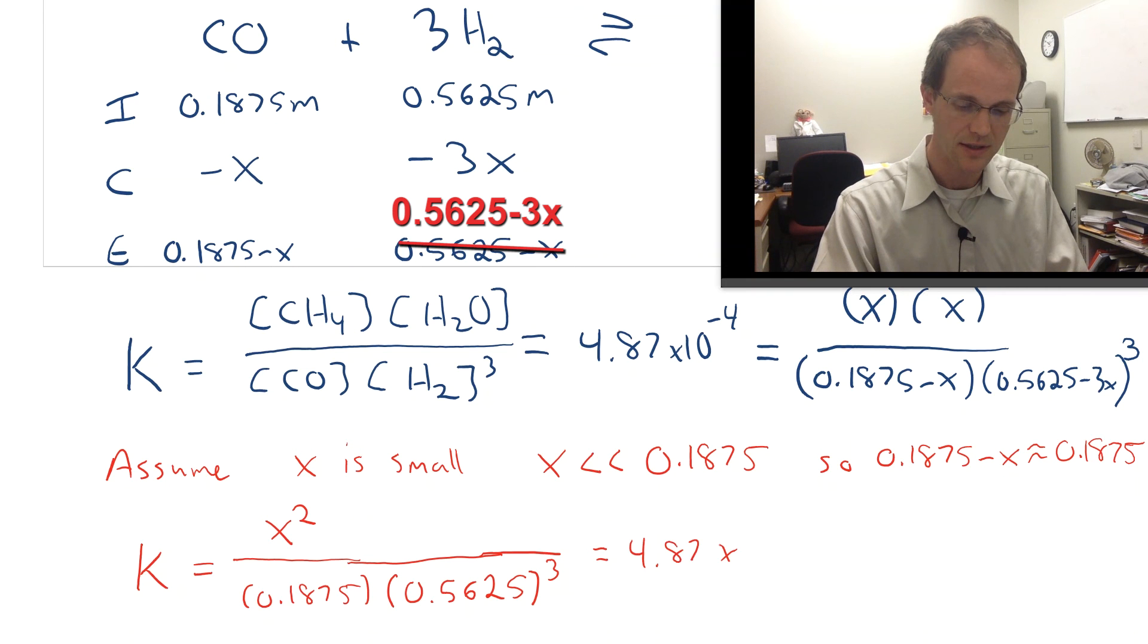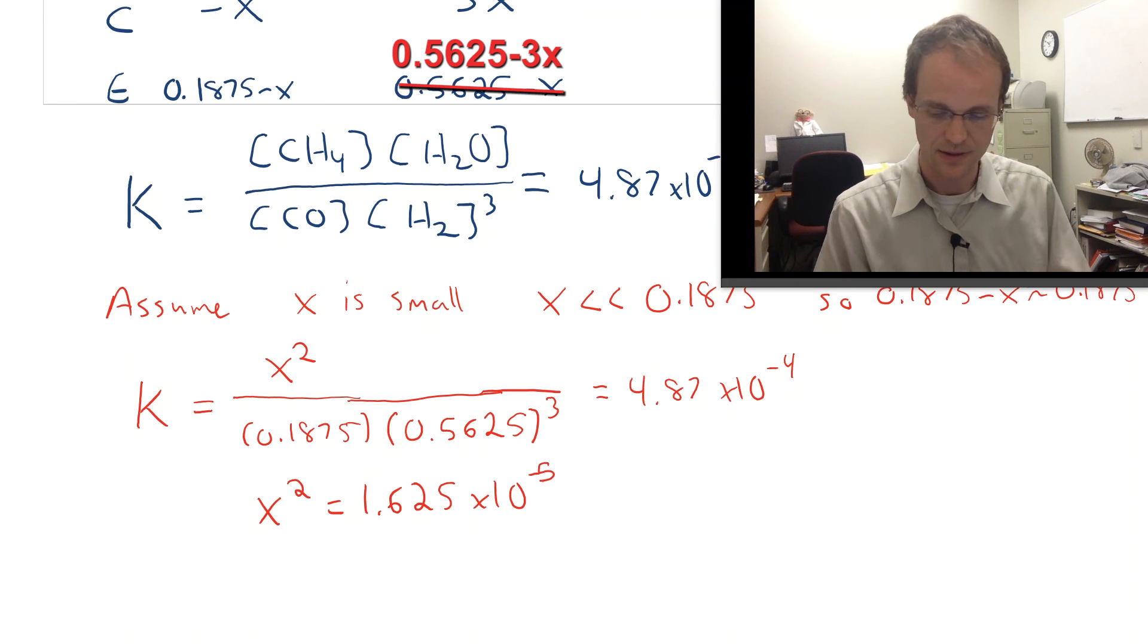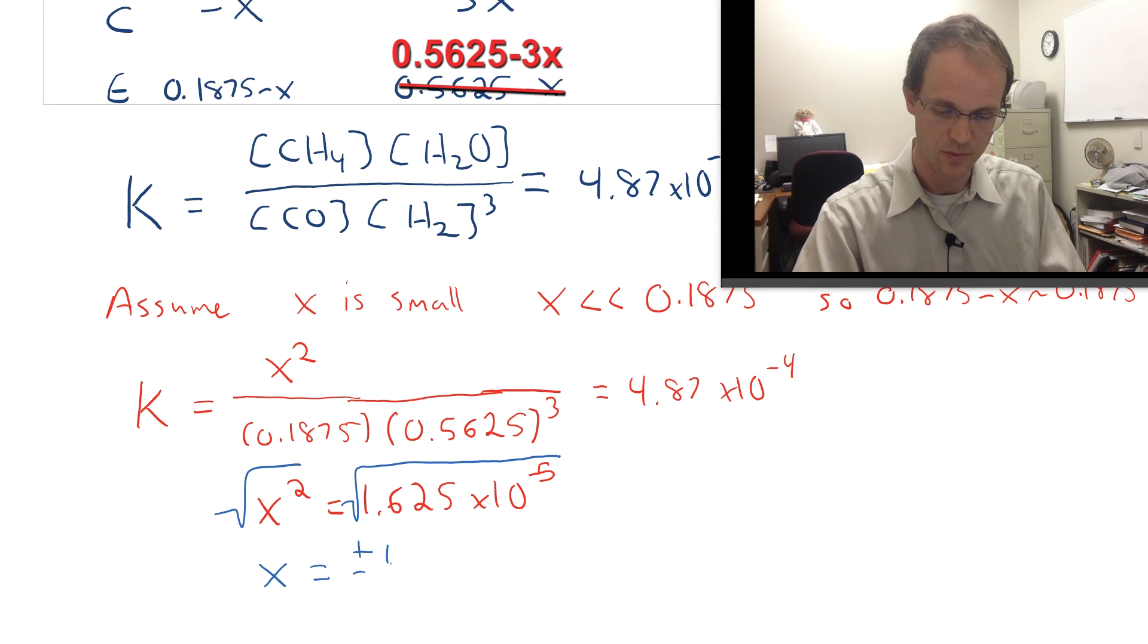That looks a whole lot easier. That's 4.87 times 10 to the minus 4. That looks easier to solve because now I've just got X squared over a number equals a number. Now I'm not going to show you all the math involved in that. You're going to multiply out the denominator, make sure to cube the 0.5625, multiply it out over on the right, and what you get is that X squared is 1.625 times 10 to the minus 5th. So that tells us the value of X squared. We're going to take the square root of both sides to find the value of X, and we get that X is plus or minus—whoops, not 1, let me erase that—0.00403 molar.